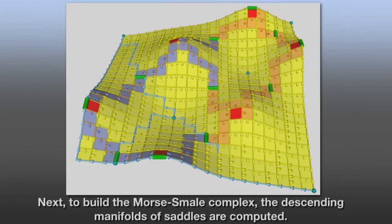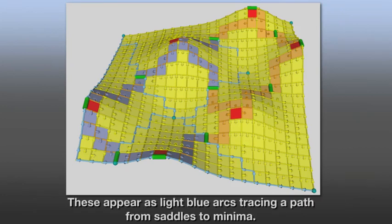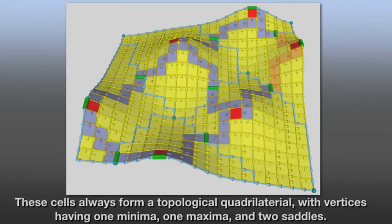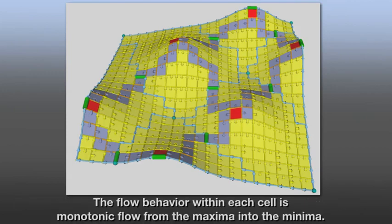Next, to build the Morse-Smale complex, the descending manifolds of saddles are computed. These appear as light blue arcs tracing a path from saddles to minima. Together, the collection of descending and ascending arcs from the saddles partition the domain into Morse-Smale cells. These cells always form a topological quadrilateral, with vertices having one minima, one maxima, and two saddles. The flow behavior within each cell is monotonic flow from the maxima to the minima.